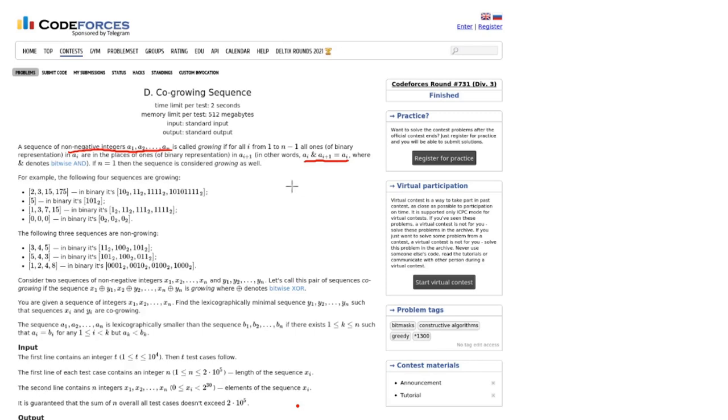Here they have provided some examples of growing sequences: 2, 3, 15, 75. And if you look at this in binary, 10 and 11, the bitwise AND gives you 10. This is in binary representation. And if you take any number like 1001111, you are still getting 10.